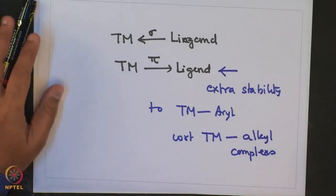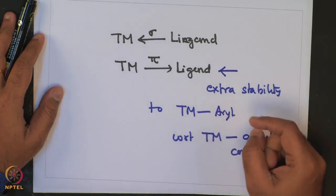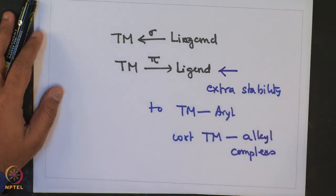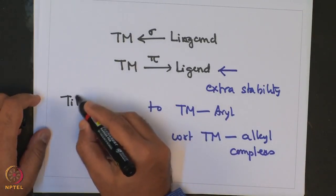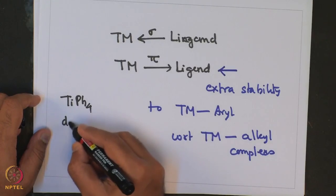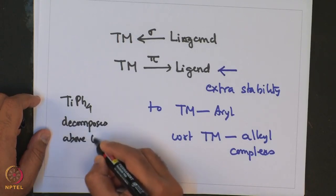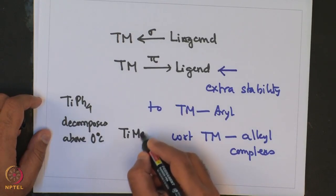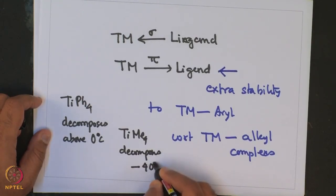This extra stability results in higher bond energy of the Transition Metal aryl bond and subsequently higher decomposition temperatures. For example, Titanium Tetraphenyl decomposes above 0°C, whereas Titanium Tetramethyl decomposes at minus 40°C.